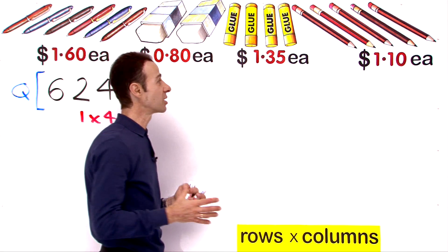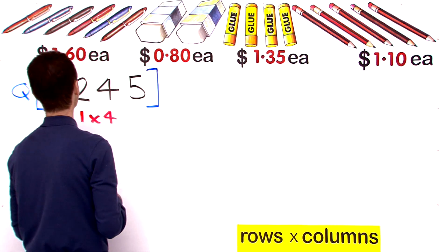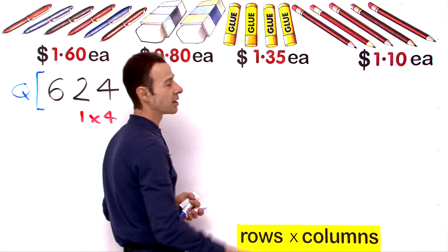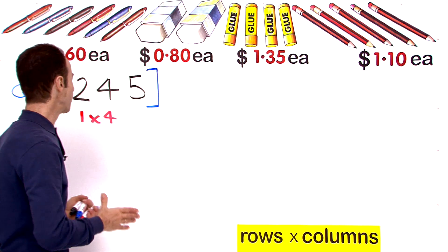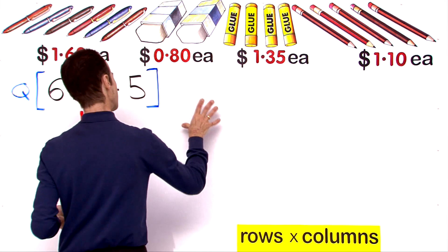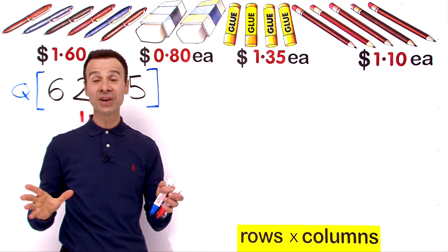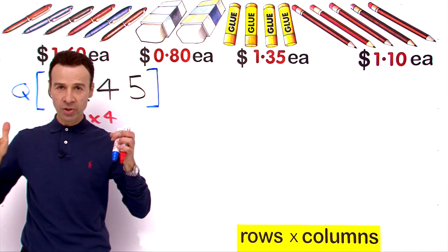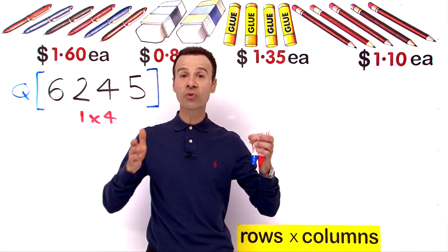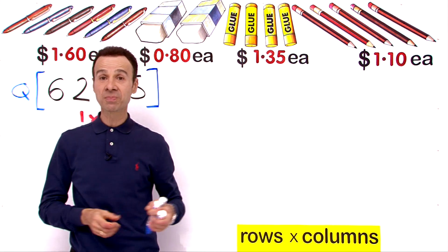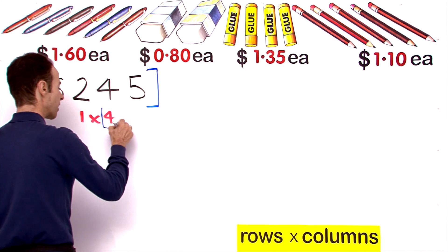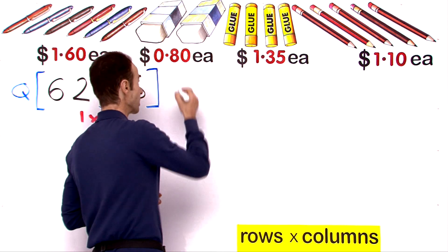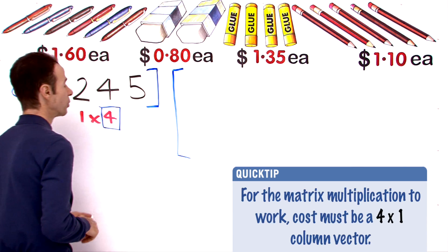The next thing we want to work with is the cost. Each group has got a different cost: $1.60 for each pen, $0.80 each eraser, $1.35 each glue stick, and $1.10 each pencil. Now if we have a 1 by 4 quantity matrix, what sort of matrix do we need here? The key rule: the number of columns in the first matrix must match the number of rows in the second matrix. We have 4 columns, so we are going to have 4 rows in the cost matrix.